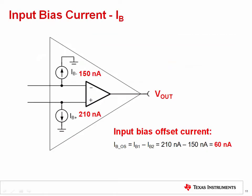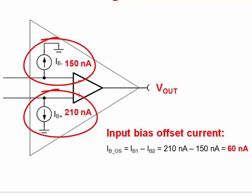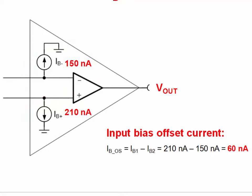Let's now move on to input bias current, or IB, and input bias current drift. Input bias current is the current flowing into the inputs of an op amp. These currents can be modeled as a current source connected to each input. Ideally, the two input bias currents would be equal and would cancel. In reality, they are not equal, and the difference of these currents is defined as input offset current.